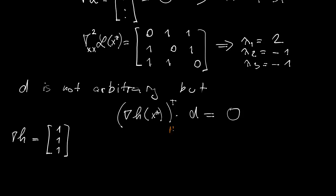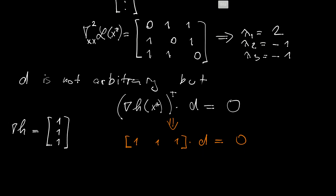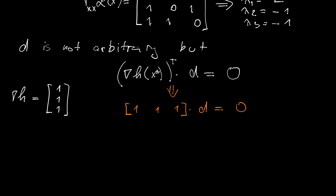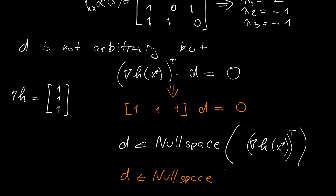So the condition here is that I have a row matrix 1, 1, 1 times D is equal to 0. But what does this mean? What is the algebraic characterization of this situation? This simply says that D must be within the so-called null space of the matrix that you obtain by taking gradient of h and its transpose. So in our particular case, D must be within a null space of a matrix [1, 1, 1, 1], right?